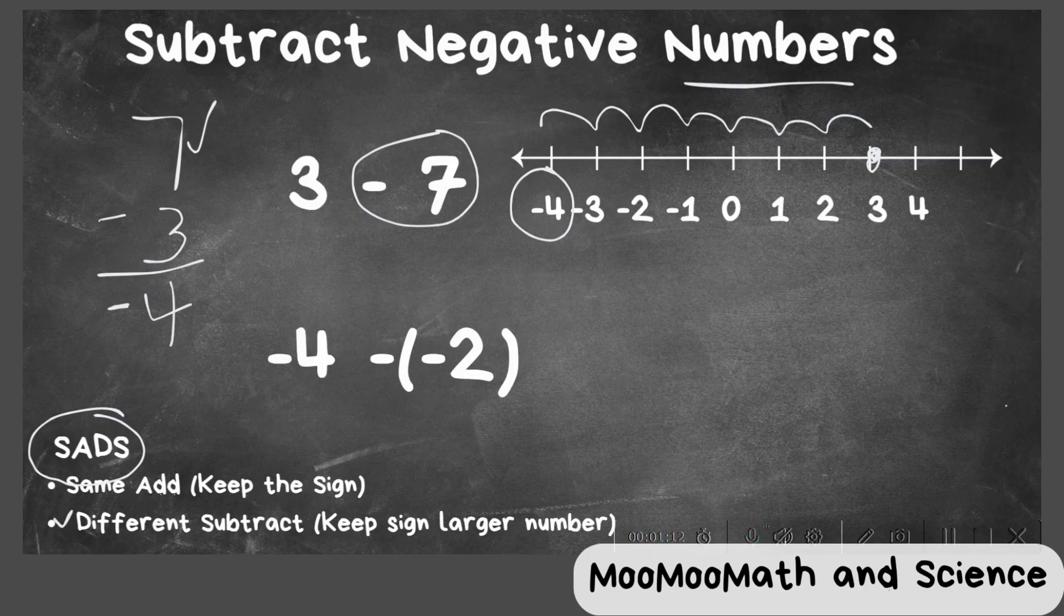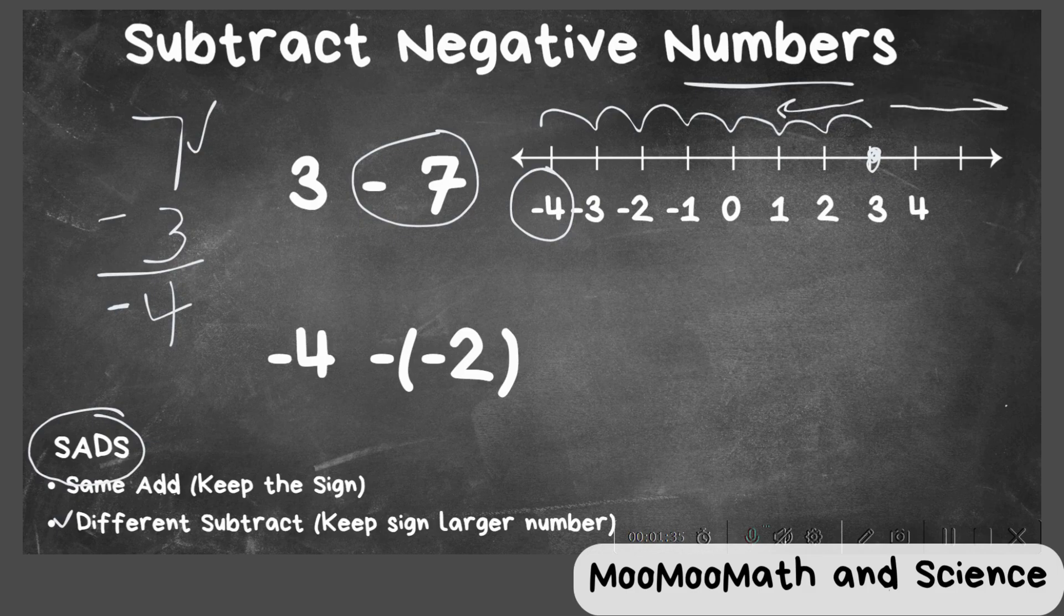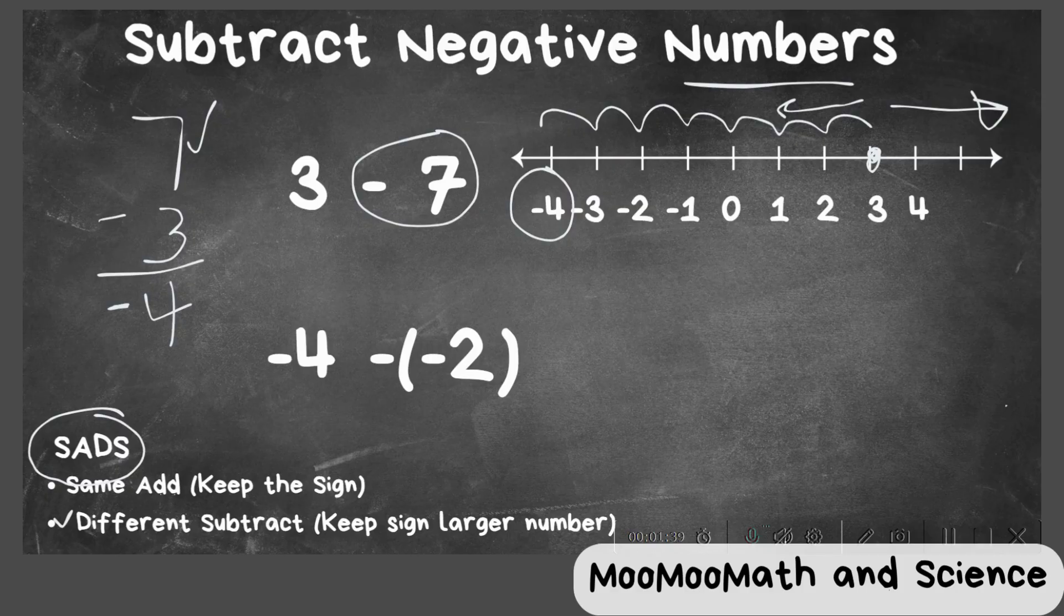Now let's apply this to the next one. We have minus a negative. Well, when we subtracted the 7, when we took 7 away, we went in this direction. Well, the negative 2 is going to be moving. It's the opposite, so it's going to move in this direction. So what we can do is change this negative to a positive.